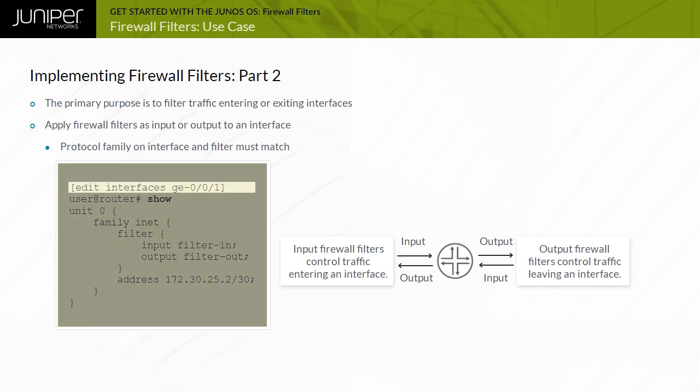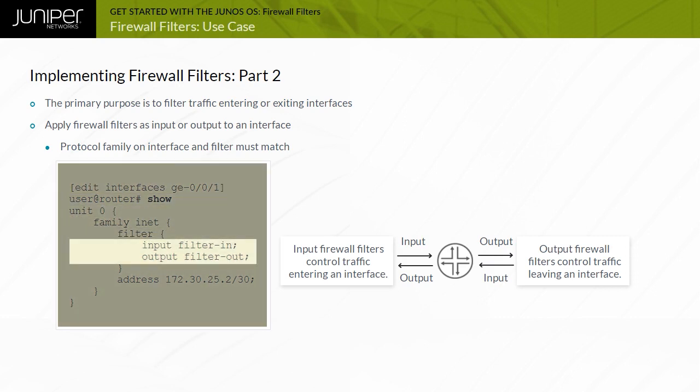To apply a single input or output filter, use the input filter name or output filter name configuration options. You can specify both input and output filters on the same interface. However, you cannot apply an IPv6 firewall filter to an IPv4 interface — the protocol family for the firewall filter and the interface must match.